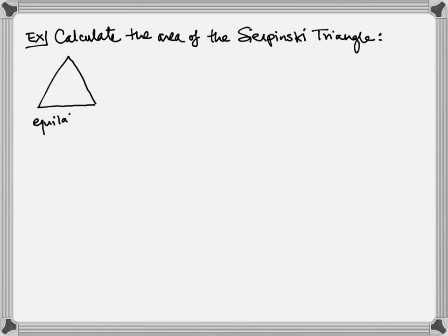The way that you make a Sierpinski triangle is you start with an equilateral triangle. We'll say this thing has area A, and so our area will be something relative to A.